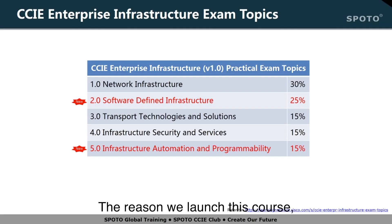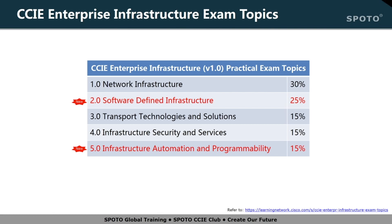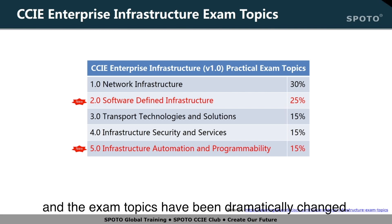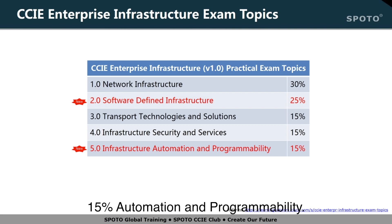The reason we launched this course is that Cisco CCIE Routing and Switching Lab exam will be revised to Cisco CCIE Enterprise Infrastructure Lab exam on April 27, 2020. The exam topics have been dramatically changed. The exam introduces 25% SDN and 15% automation and programmability.